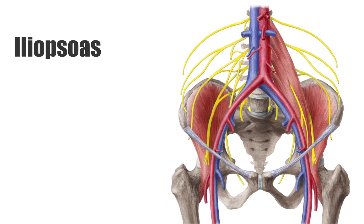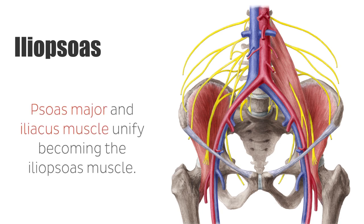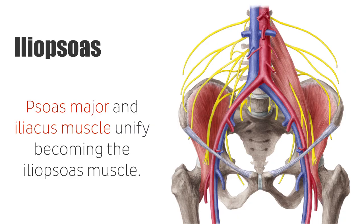The psoas major and the iliacus muscle unify in the lateral pelvis shortly before the inguinal ligament, becoming the iliopsoas muscle. There they pass below the inguinal ligament through the muscular lacuna together with the femoral nerve. Both muscles are completely surrounded by the iliac fascia. The lumbar plexus lies dorsally from the psoas major muscle, which is penetrated by the genitofemoral nerve. Medially from the psoas major runs the sympathetic trunk.